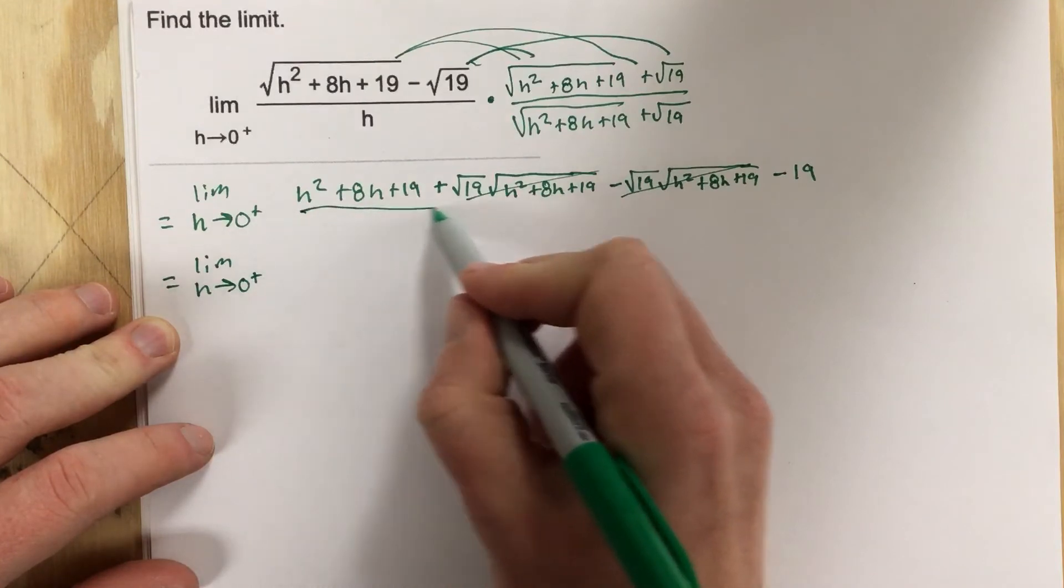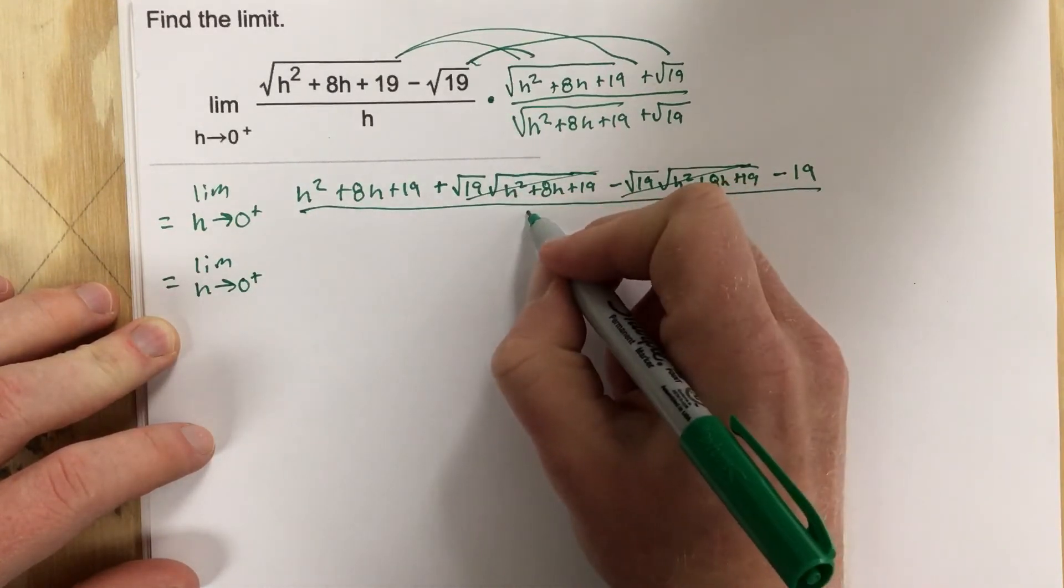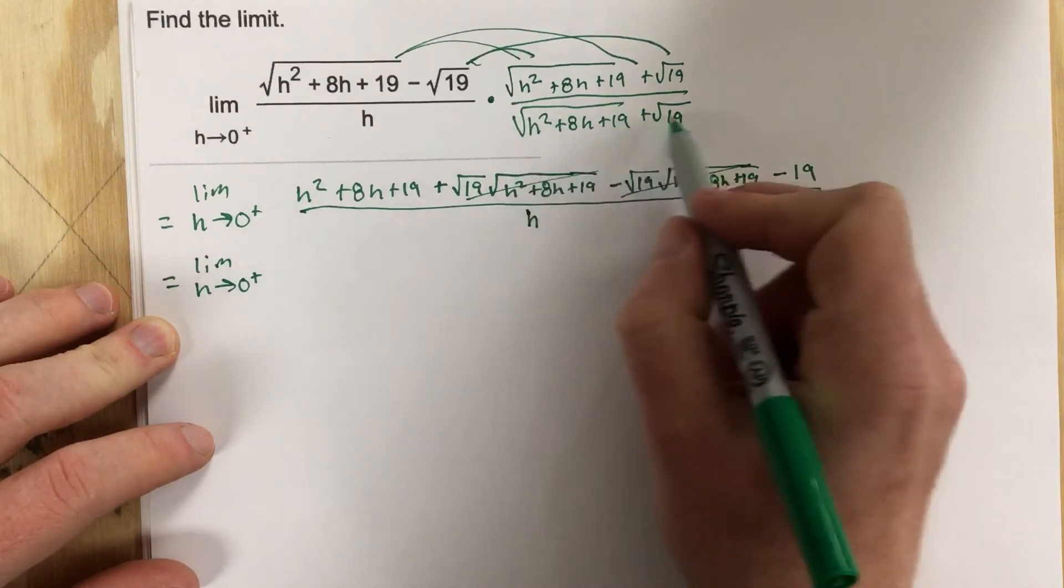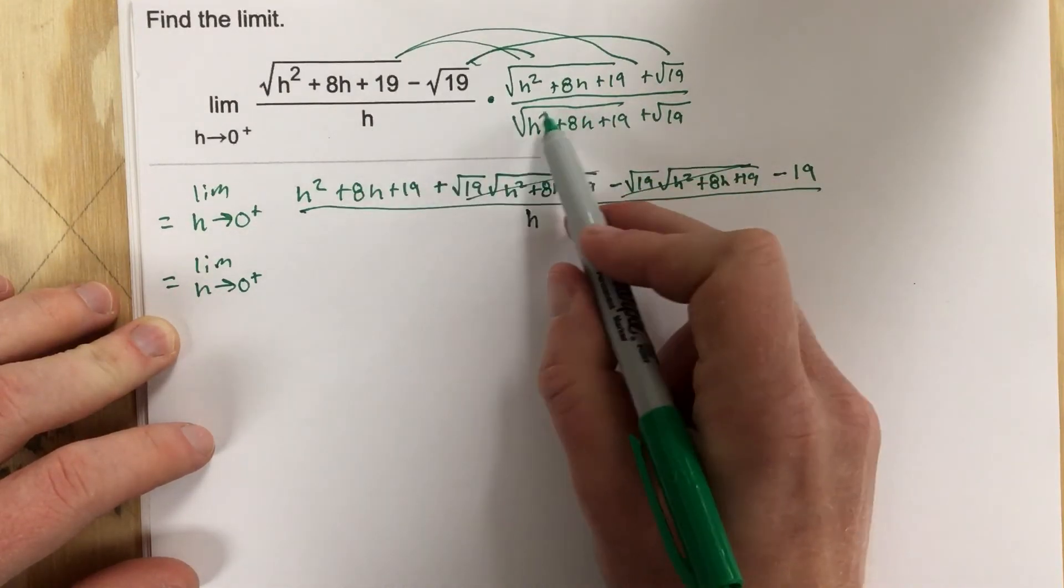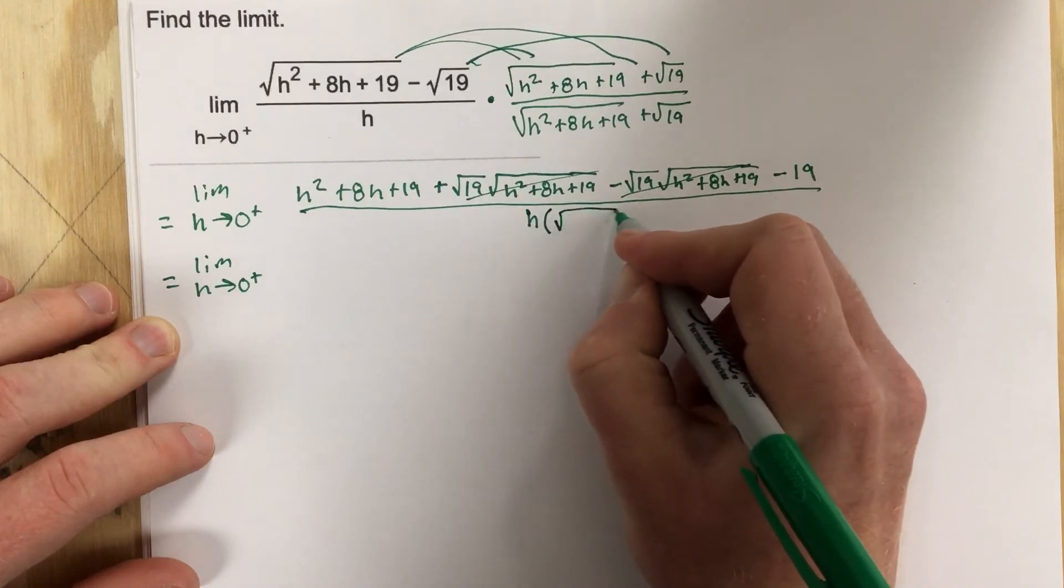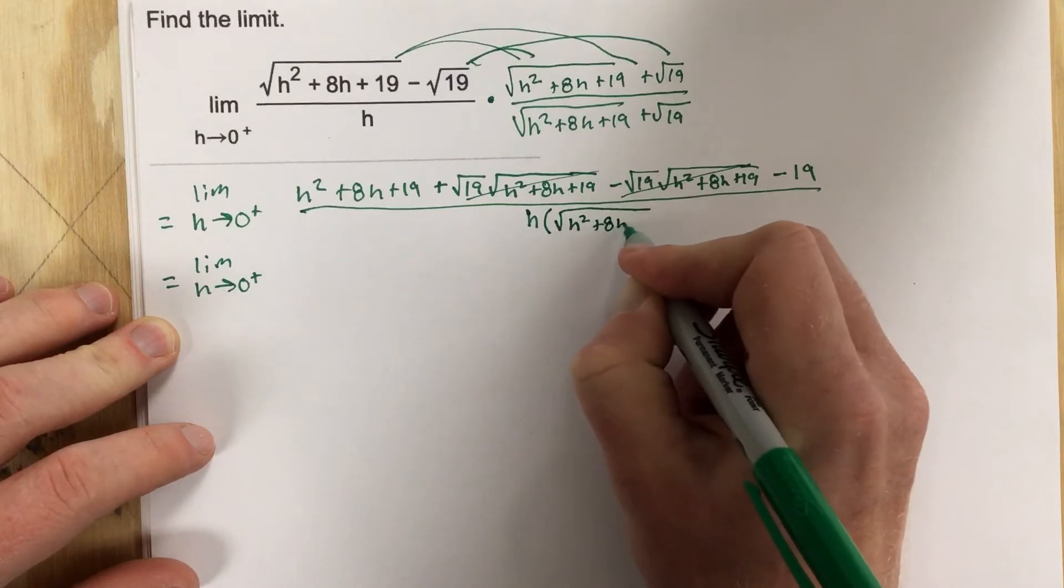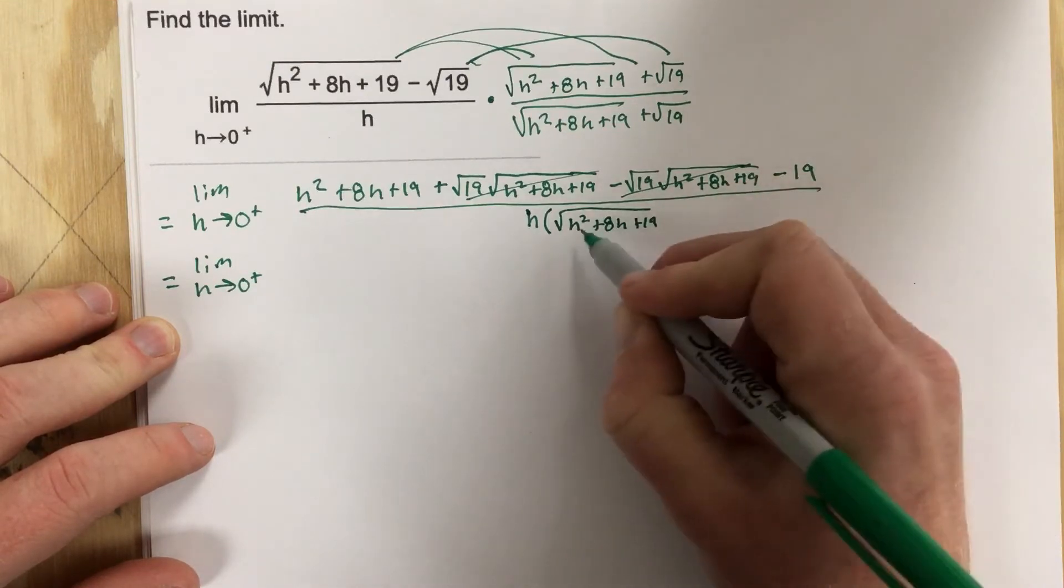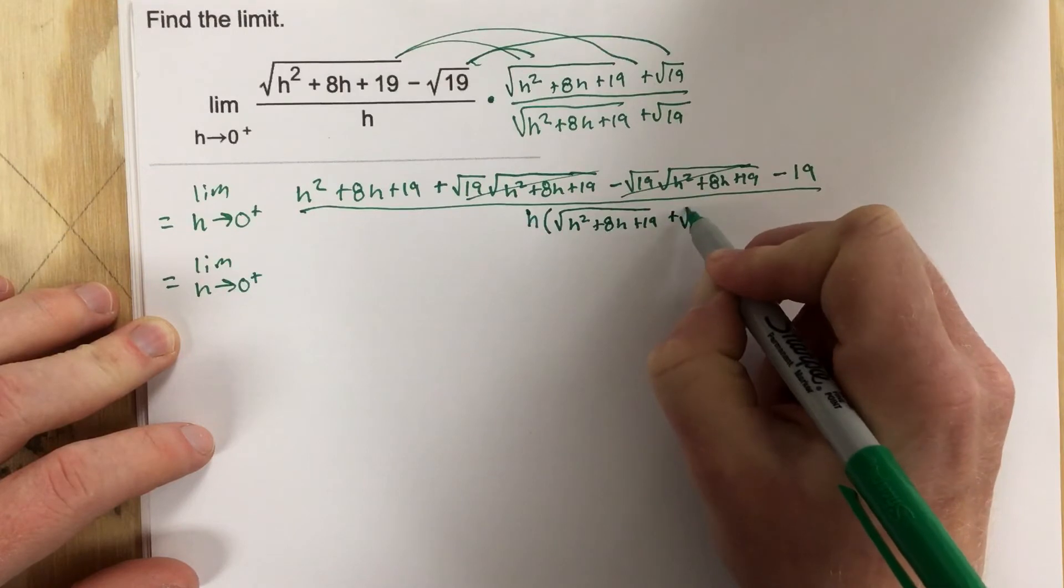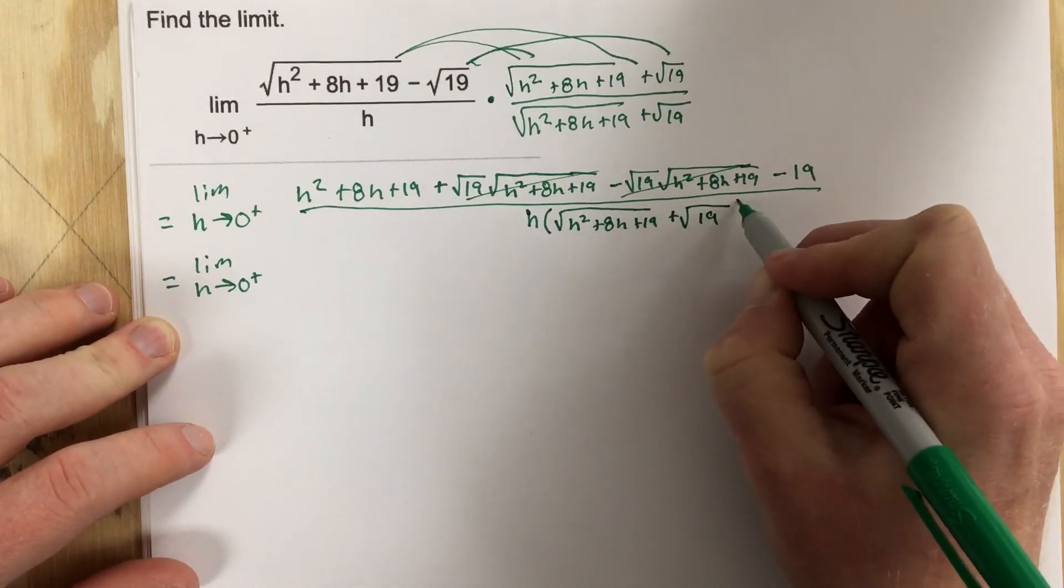Oh by the way this is all over h. I need to make sure I put that in there. And it's not just over h it's h times I forgot to multiply the bottom so this would be root and I just put it in parentheses because I'm trying to cancel the h so I don't really want to do any distributing or anything like that. So I have just in parentheses here the root h squared plus 8h plus 19 plus the root 19.